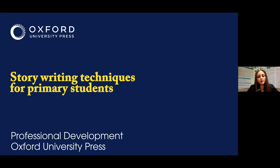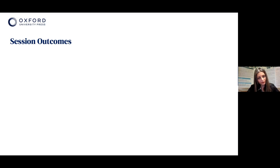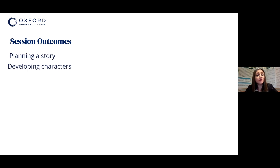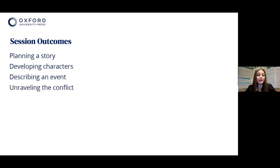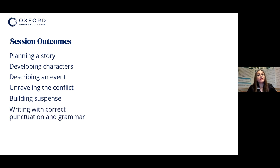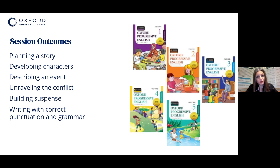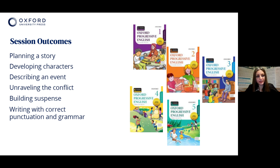Our outcomes for this session are: how to plan a story, how to develop characters, describing an event, unraveling a conflict, building suspense, and writing with correct punctuation and grammar. We're going to borrow some content from our Oxford Progressive English and from our New Oxford Modern English as well, to show how these books support story writing.